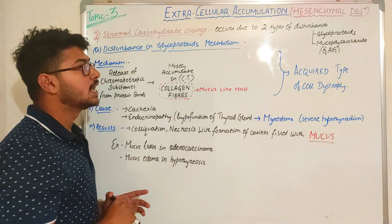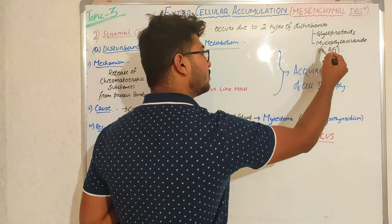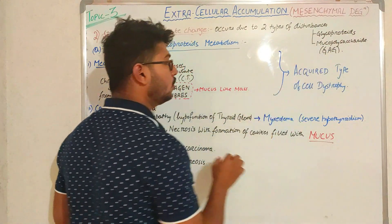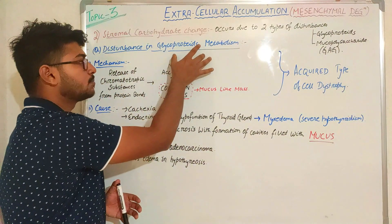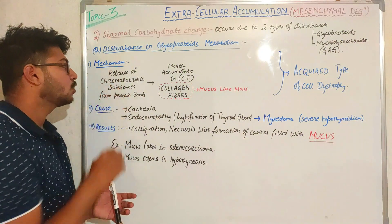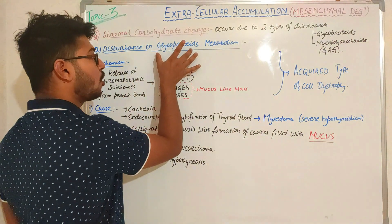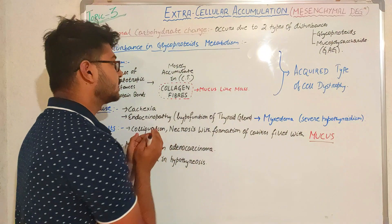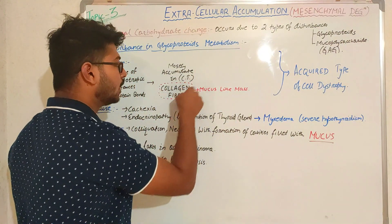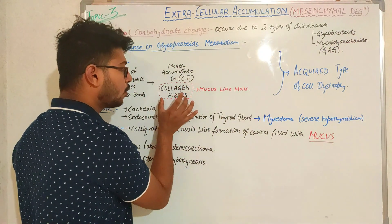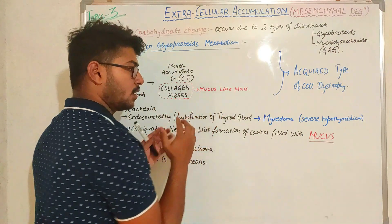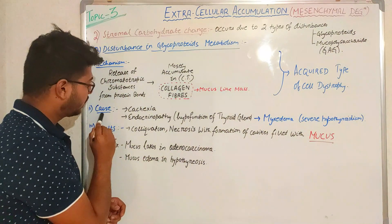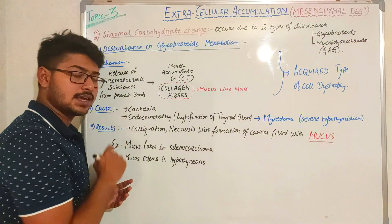Next, we discuss carbohydrate accumulation in extracellular spaces, which occurs due to two types of disturbances: glycoprotein disturbance and mucopolysaccharide disturbance. In mucopolysaccharide disturbance, the most important is the disorder of glycosaminoglycans. In glycoprotein metabolism disturbance, chromotropic substances are released from protein bonds due to glycoprotein deposition. These chromotropic (discolored) substances lead to accumulation in connective tissue collagen fibers, which then swell and look like mucus — a filled mucus mass.